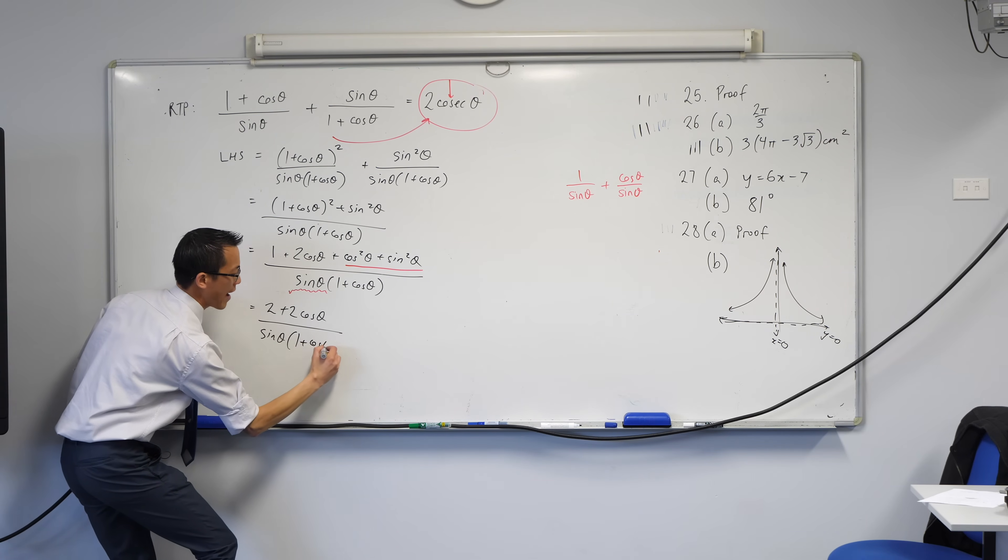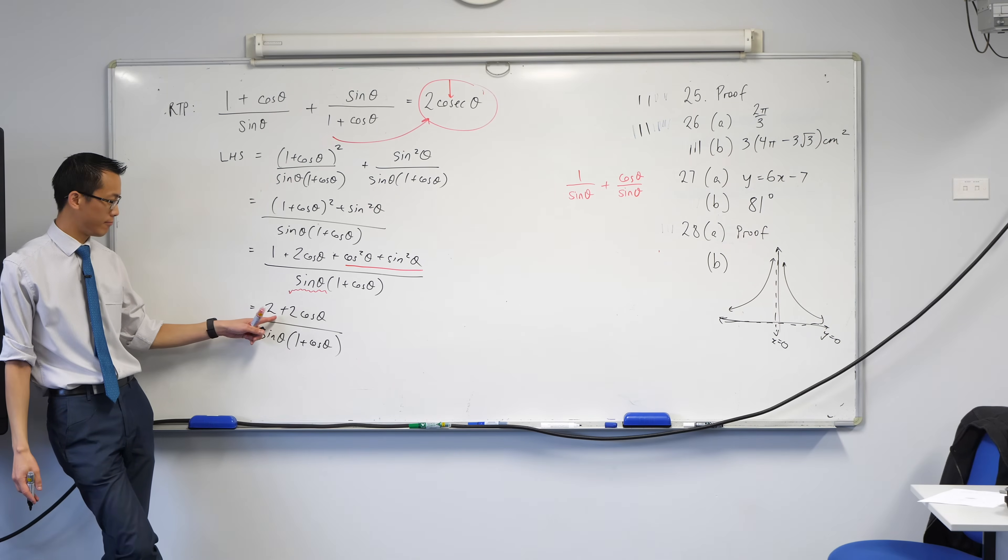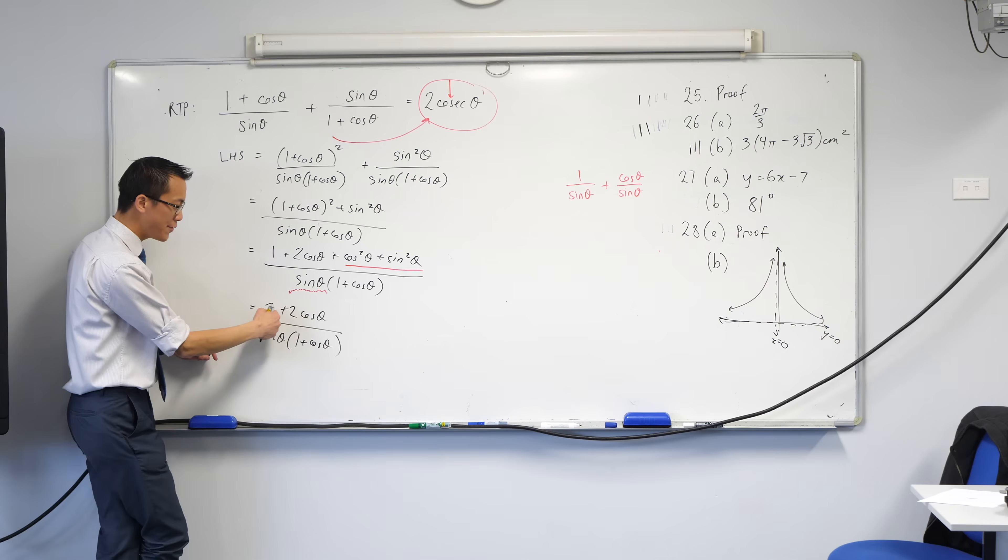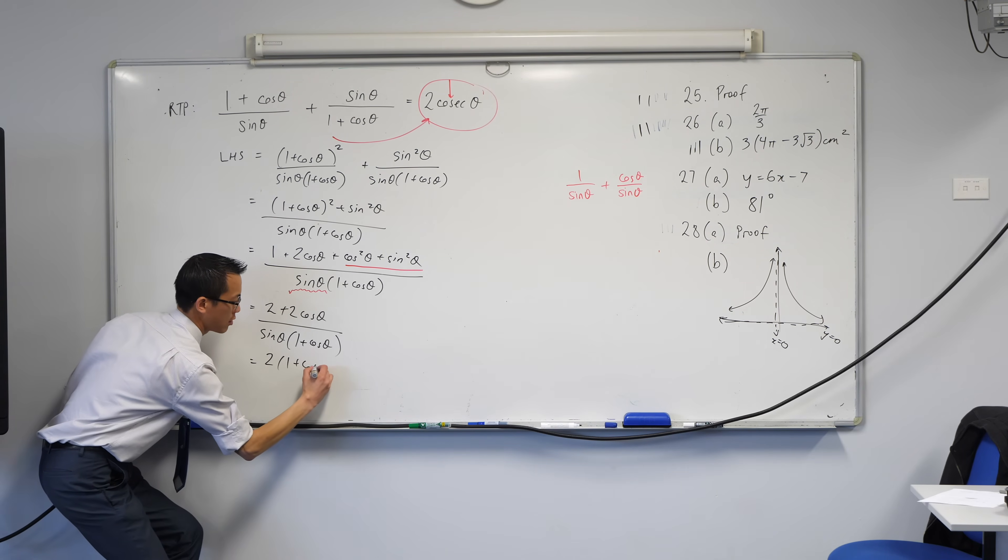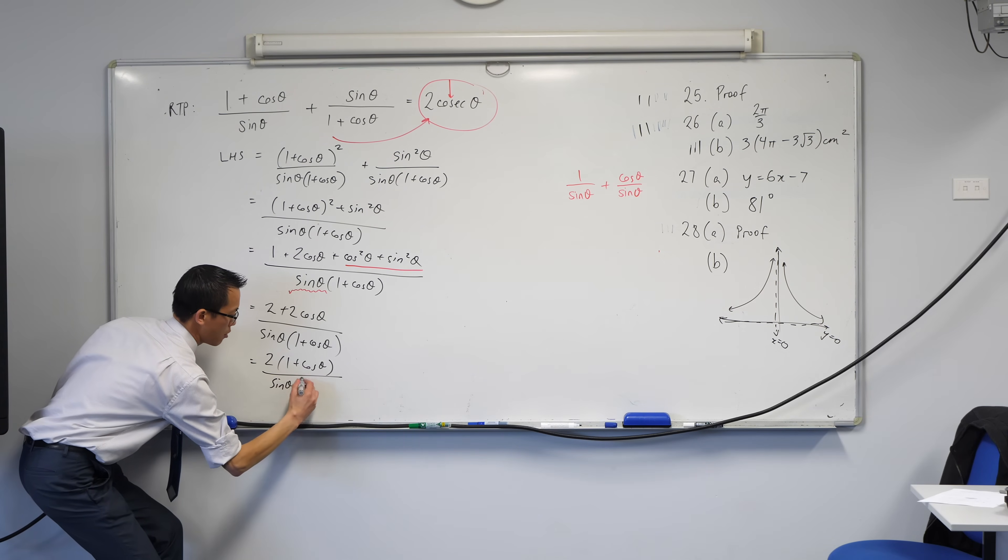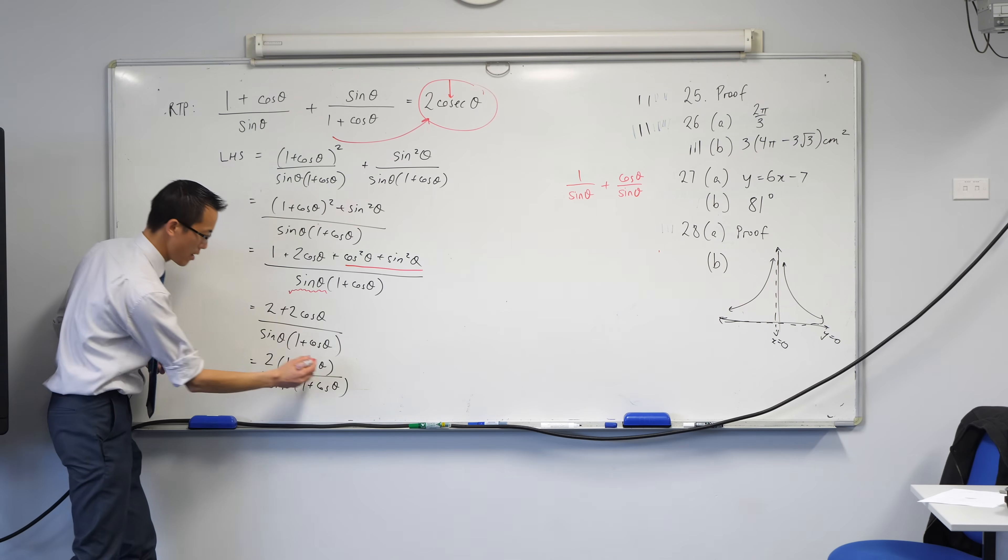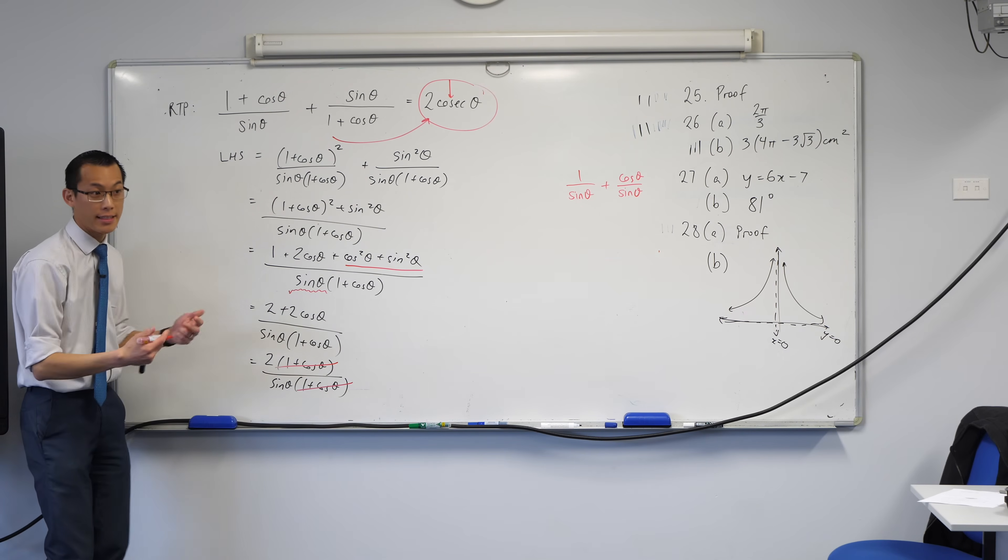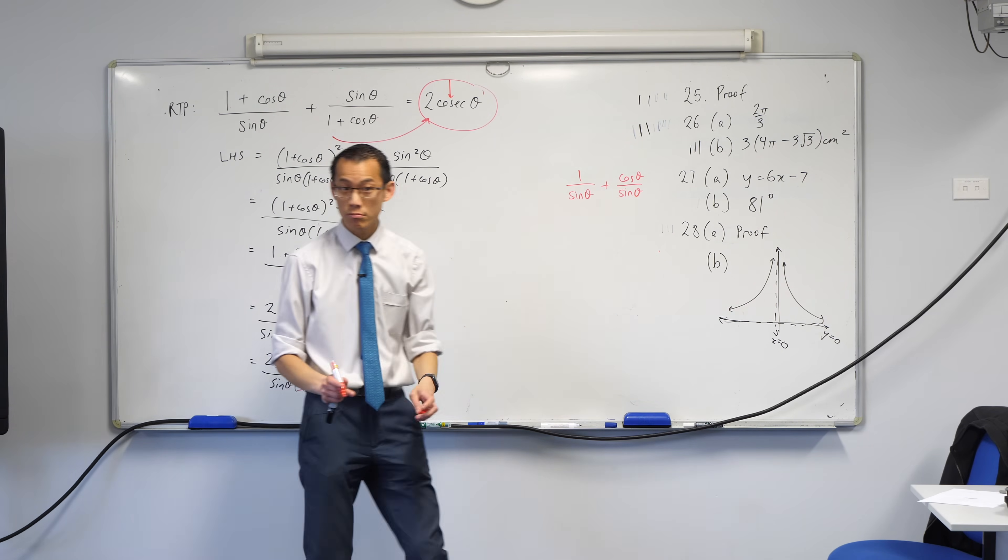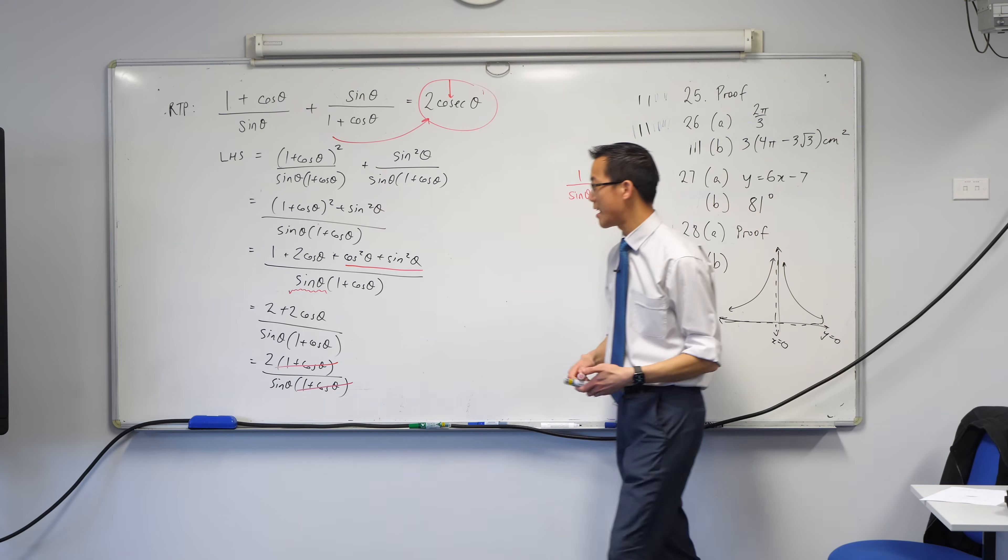And then you can see I can factorize out 1 plus cos theta on the top, or I can factor out 2 is an easier way to say it. Factor out 2 leaves you with, maybe I'll write it for you just so you can see it, 1 plus cos theta in the brackets. That leaves you with a sine theta on the bottom and a 1 plus cos theta which is about to cancel. You see that? So, there goes the cancel, cancel, and then literally my next line is that. And I'm done. Does that make sense? You see where I got there?